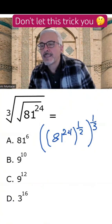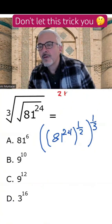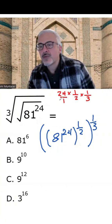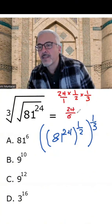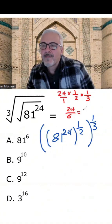So basically, this means 24 times 1 half times 1 third. And since this is over 1, we're going to get 24 over 6, which is 4.